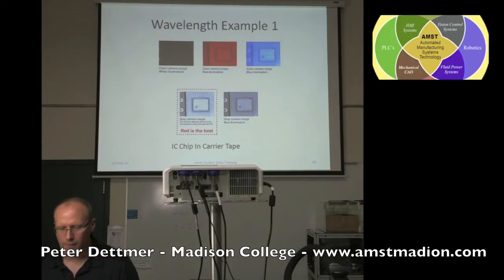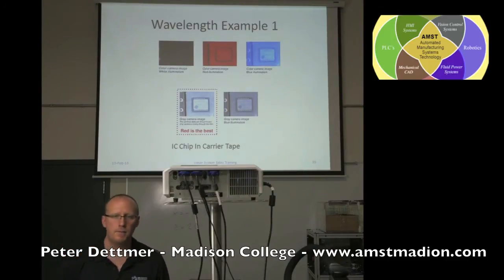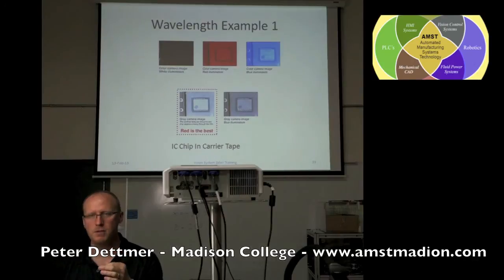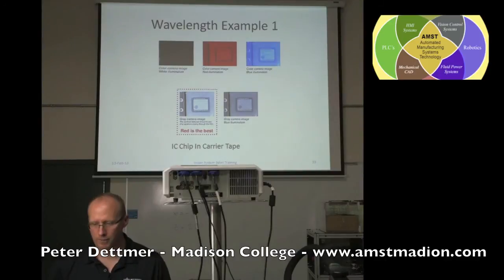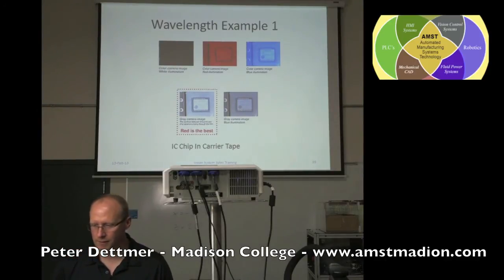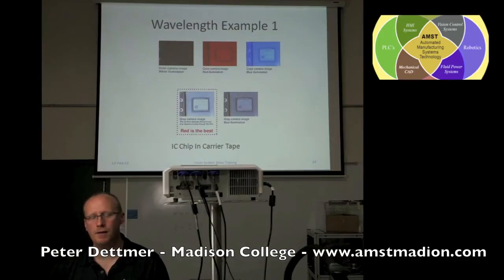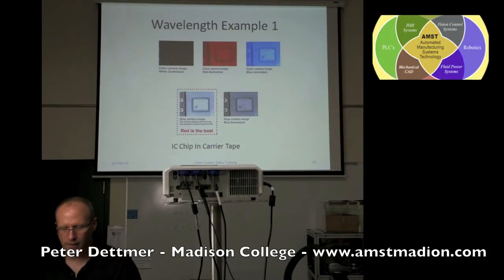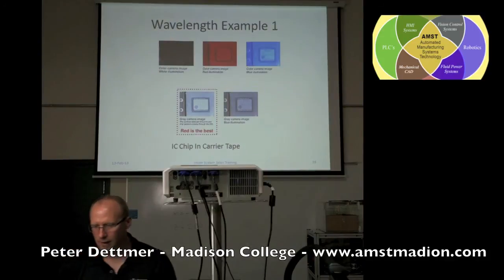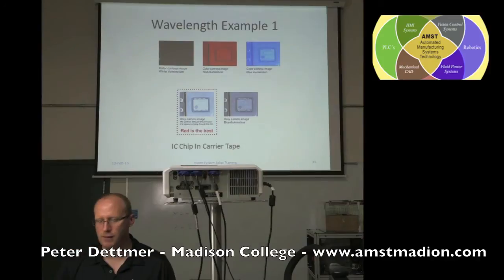Wavelength — I mentioned earlier that there's something you can do with filters. You can filter out all other light by using specific filters, only letting a certain light frequency come through and be absorbed by the imager. Using different types of lighting in this example, a camera with a red filter gives the best result as it filters out all surrounding light.